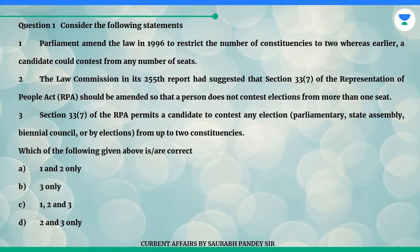Three: Section 33.7 of the RPA permits a candidate to contest any election — parliamentary, state assembly, biennial council or by-elections — from up to two constituencies. Which of the following given above is correct? A. 1 and 2 only. B. 3 only. C. 1, 2 and 3. D. 2 and 3 only.